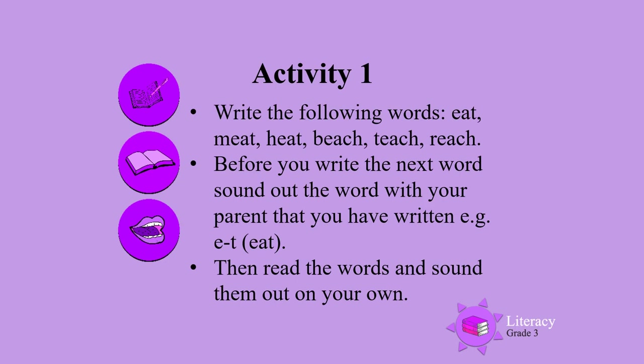Before you write the next word, sound out the word with your parent that you have already written. For example, eat — the letters E and A say E. Beach — the letters E and A make the sound E. Then read the words and sound them out on your own.